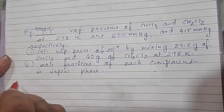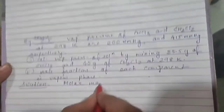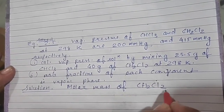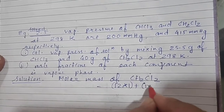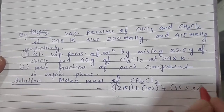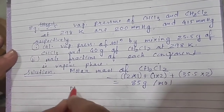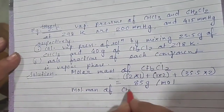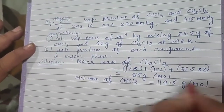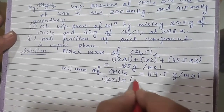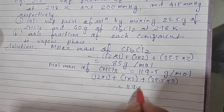First we will calculate the molar mass of CH2Cl2 (dichloromethane): 12×1 + 1×2 + 35.5×2 = 85 g/mol. Similarly, molar mass of CHCl3 (chloroform): 12×1 + 1×1 + 35.5×3 = 119.5 g/mol.